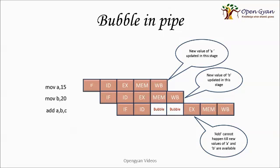So how do we solve this? The best solution is that of bubble in the pipe. A bubble in the pipe is known as a delay that is being introduced in one of the instructions such that the instruction pipelining can go. Over here, in this example,